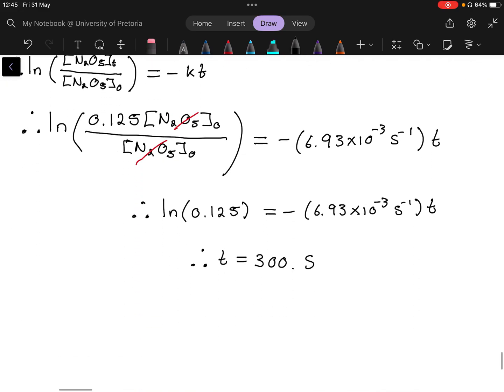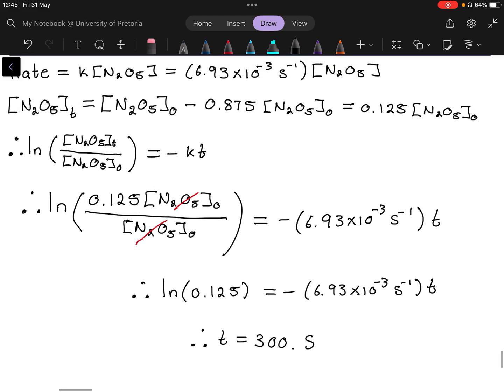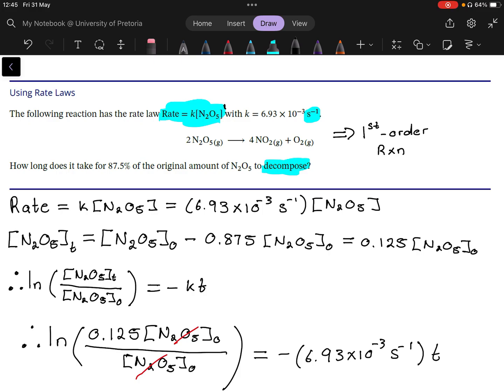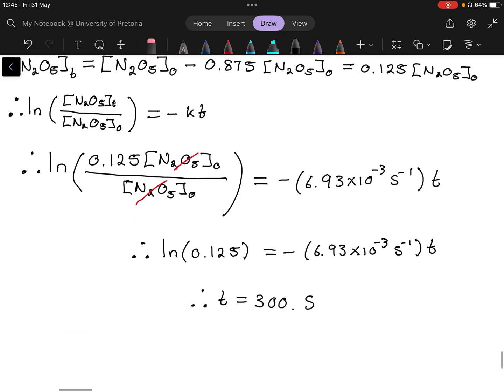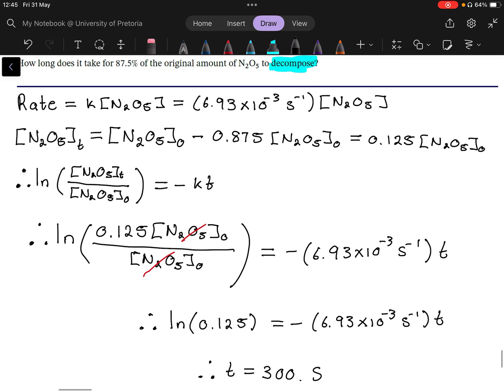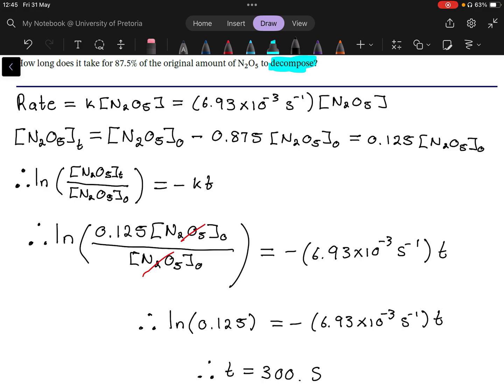Yeah, because the rate constant is in per second that means your time unit will be seconds. Right, so it will take 300 seconds for N₂O₅ to decompose by 87.5 percent, or in other words three half lives. But yeah, that's not for this example at the moment. You can also use that of course for how long will it take to decompose for three half lives. But this example I decided to go the other way around. Alright, I think that's it for now. I'll see you in the next example video. Thank you for watching.